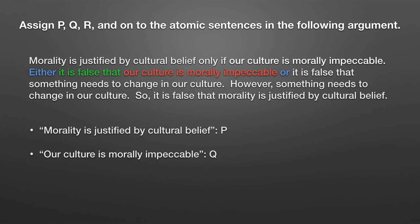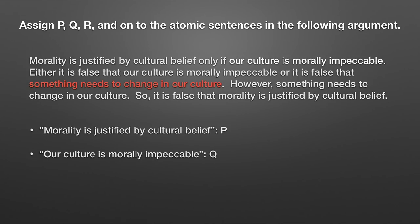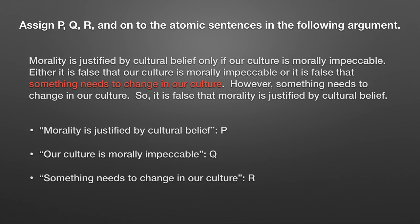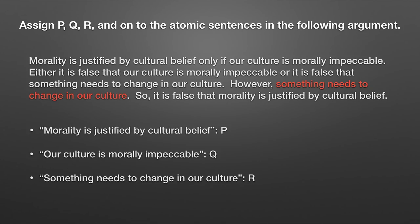We've also got the 'either...or' logical connective, and then the second 'it is false that.' This brings us to our third atomic proposition in the argument: 'something needs to change in our culture.' Following rules one and two, it's assigned R, because it's a new proposition. The next sentence also says 'something needs to change in our culture' — following rule two, it still gets R. The word 'however' is not actually a logical connective — it just helps indicate the flow of the argument.